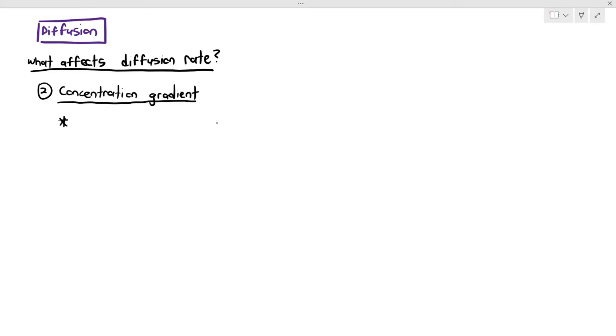The second one that we are going to be looking at is something called concentration gradient. What is the meaning of concentration gradient? Concentration gradient basically means the difference in concentration between two areas.